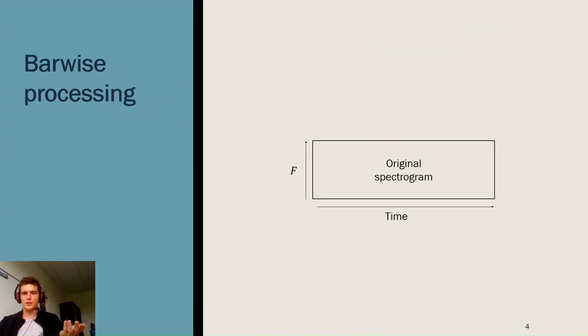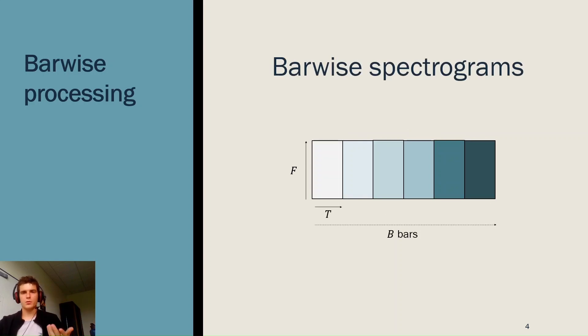Hence, starting from the original spectrogram of a song and by estimating the downbeats in this song, we separate the content in bar-wise spectrograms. Hence, it's releasing a new time dimension, which is time t at the bar scale. And the b bars correspond to b different bars in the song.